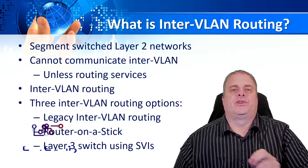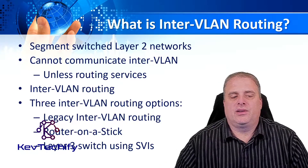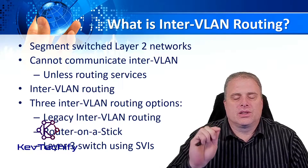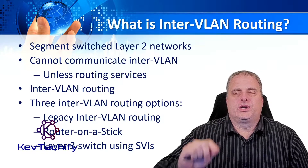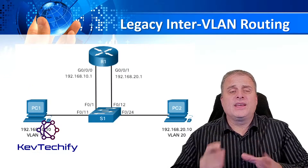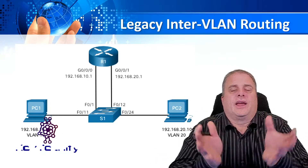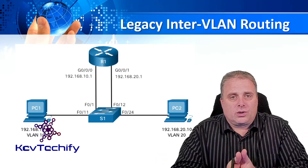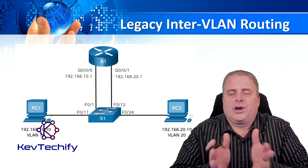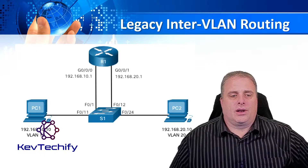We have three options for inter-VLAN routing: one is legacy inter-VLAN routing, the second is router on a stick, and the third is using a Layer 3 switch with switch virtual interfaces. Legacy inter-VLAN routing is legacy — it's old, it's slow, it's not efficient, and it's pretty costly when you start looking at it in terms of physical equipment.